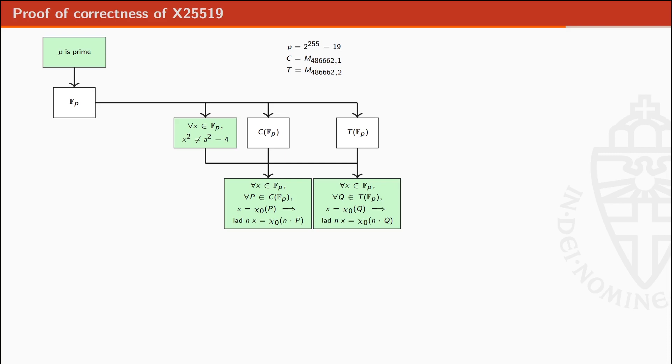Using the previous theorem, we know that the Montgomery ladder computation for points on the curve and on the twist are correct. Using Legendre symbol, we prove that 2 is not a square in Fp. And as a result, for all X in Fp, there exists a point which is either on the curve or on the twist.